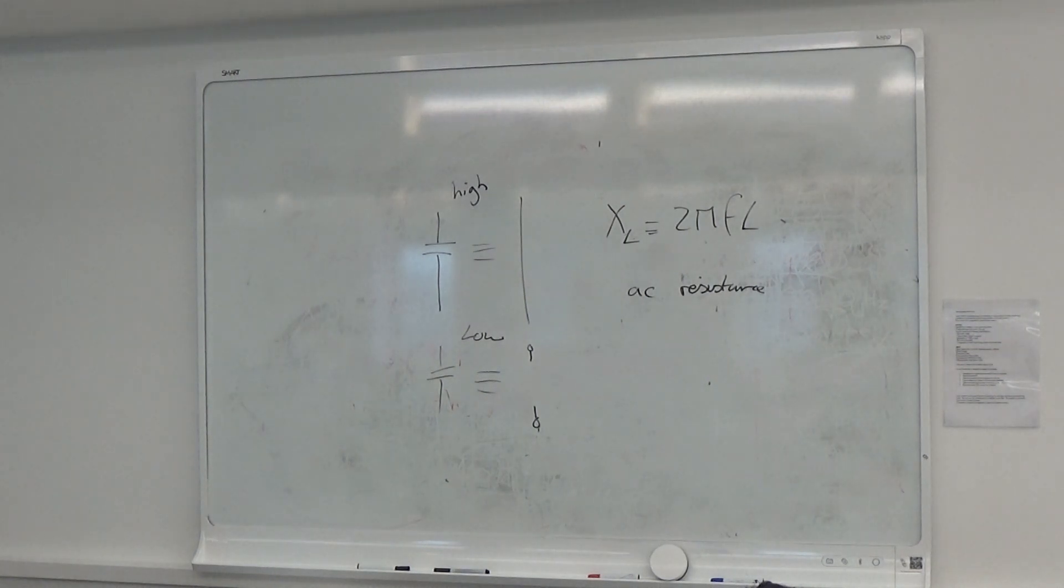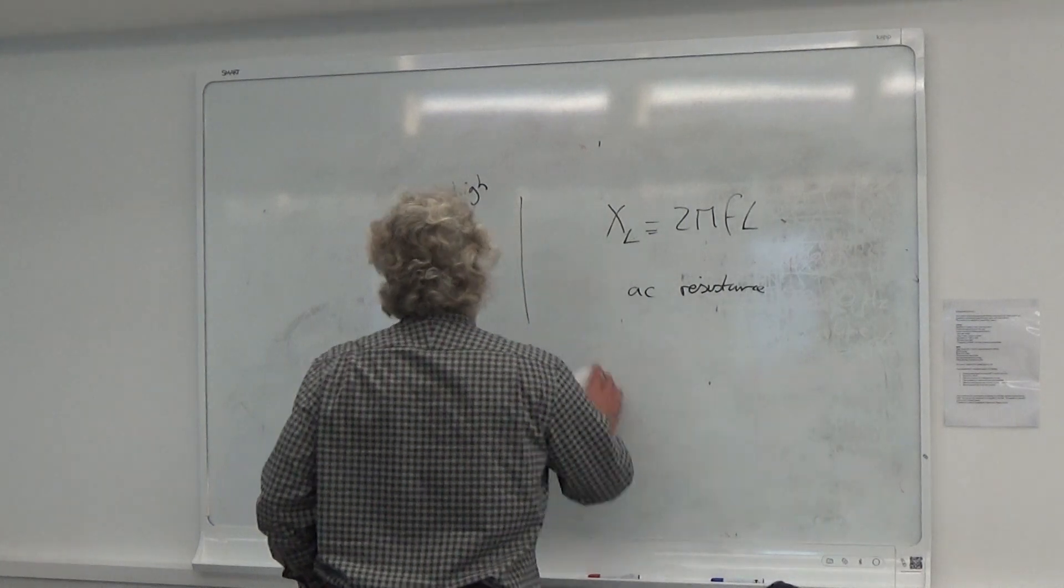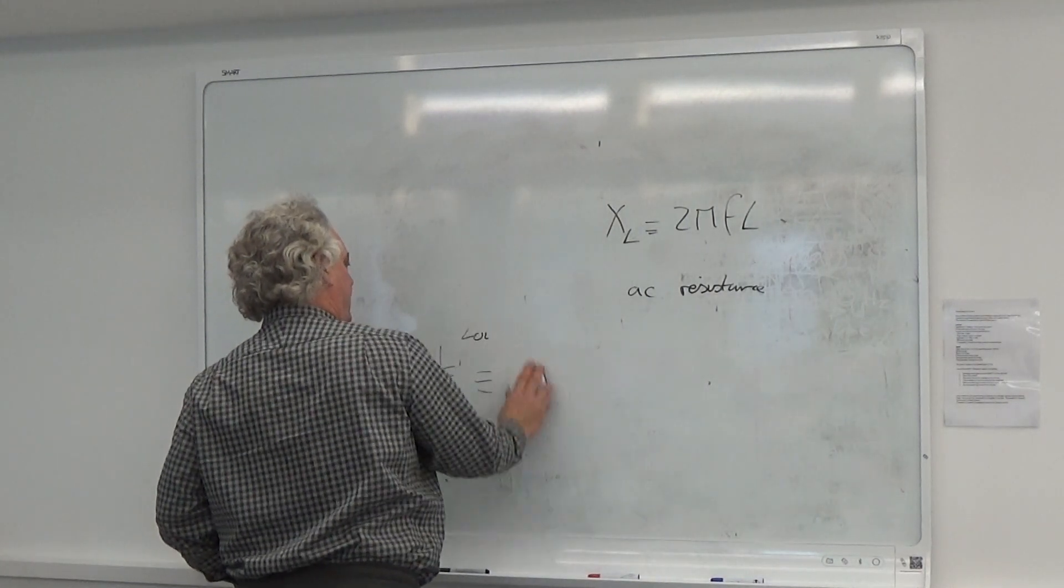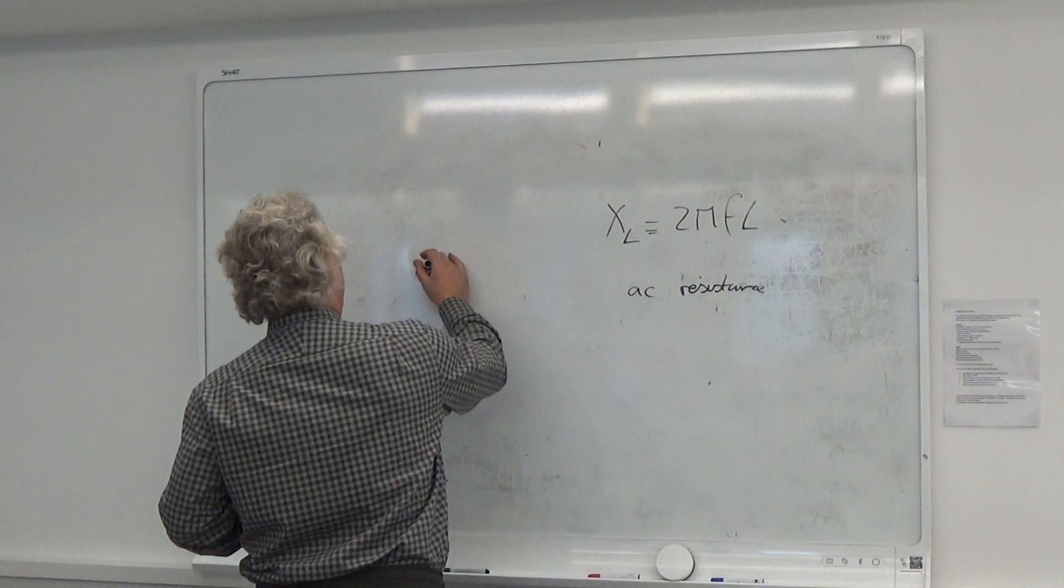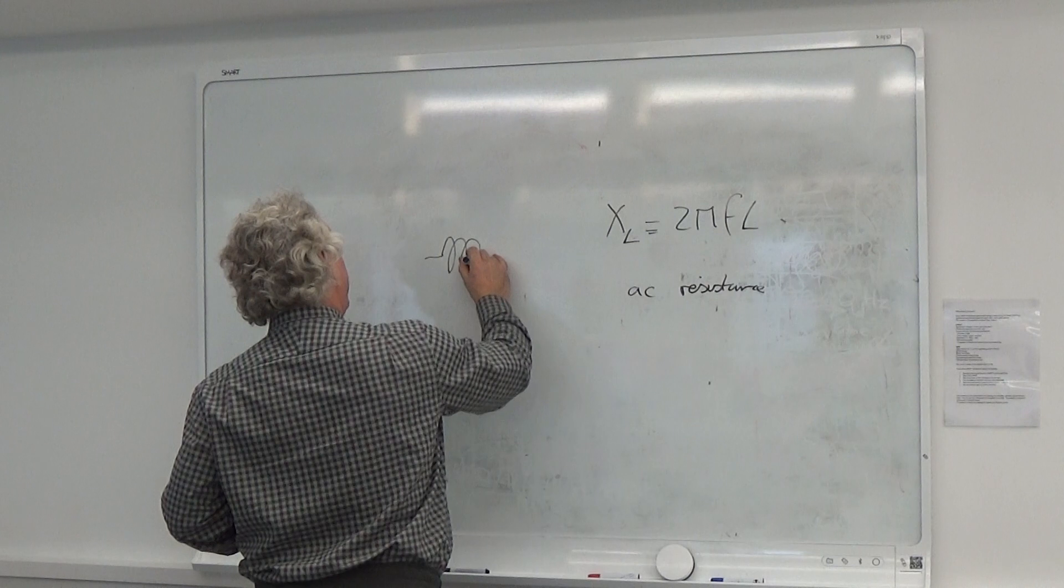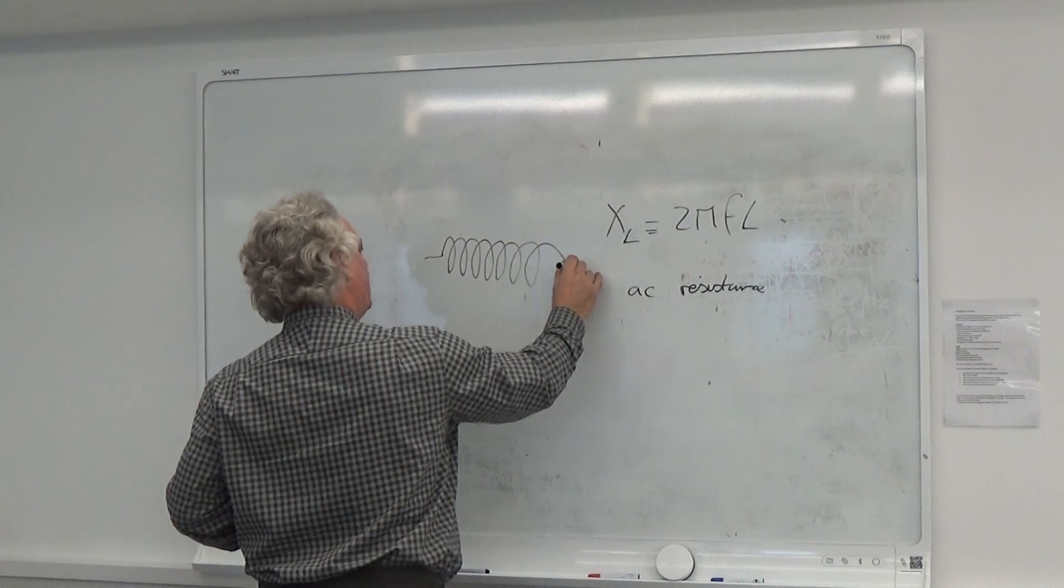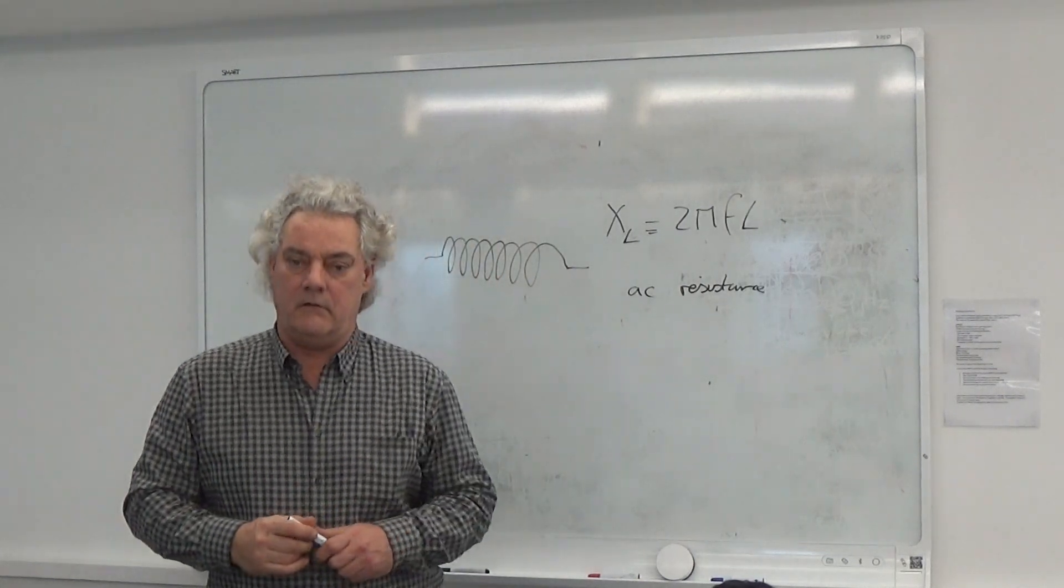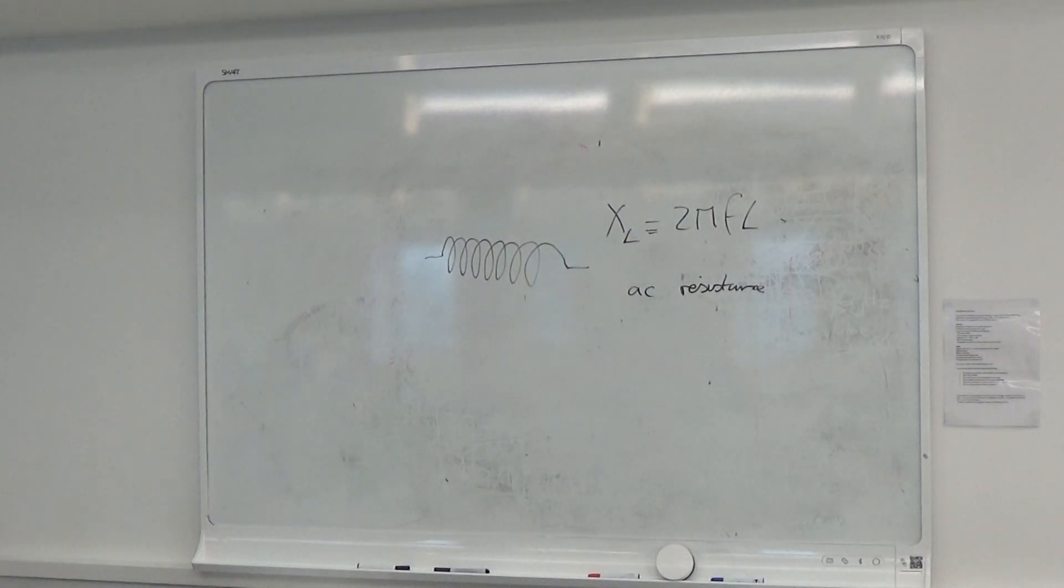And the capacitor reactance is one upon 2 pi FC, remember? What I want to look at now is inductors. And with an inductor, an inductor is a coil of wire, right? It can have metal in the middle, which will increase its flux density. But let's just imagine it's an air-wound coil, like so. I've got a cylindrical coil. Could be a flat wound coil. Could be lots of different shapes.